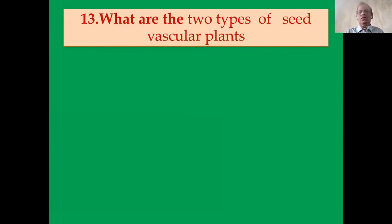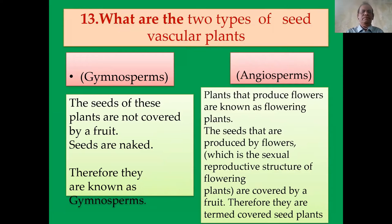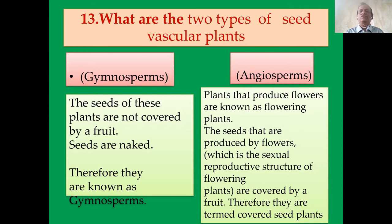What are the two types of seeded vascular plants? Gymnosperms are non-flowering seed plants; angiosperms are flowering seed plants. In gymnosperms, the seeds are not covered by fruit — they are naked seeds. Therefore they are known as gymnosperm plants. Plants that produce flowers are known as flowering plants. The seeds produced by flowers are covered by fruit; therefore, they are termed angiosperms.